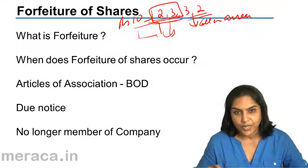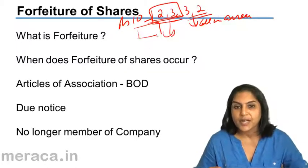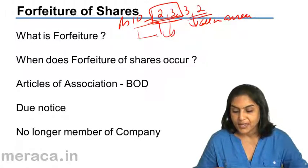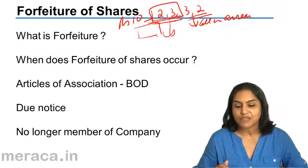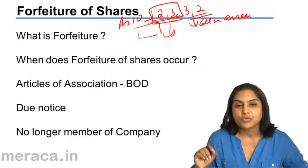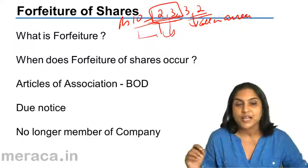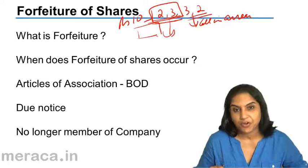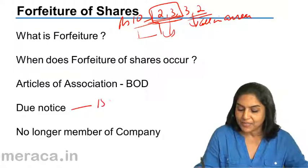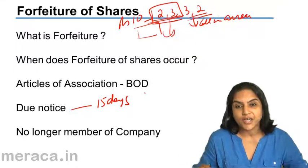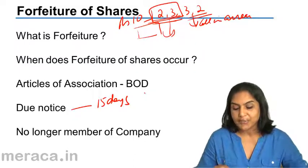When a shareholder does not pay up the installments due, does not pay up the interest on the calls in arrears, the board of directors — by the powers it has from the articles of association — can send a notice to him, telling him that if you do not pay up the calls in arrears and the interest on the calls in arrears, then your shares will be forfeited. He must be given at least a 15 days notice and be told that his shares will be forfeited if he does not pay up this money.